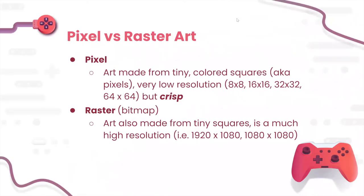Within the art world there are mainly two different categories: pixel art and raster art. Pixel art is made with very tiny colored squares — pixels — usually in very low resolution, like 8x8, 16x16, 32x32, etc. When we say pixels, we mean very crisp pixels, not super low-res blurry images. We'll show an image to make it clear what we mean by crisp pixels.